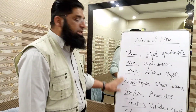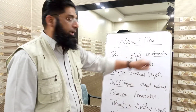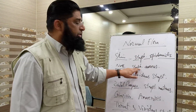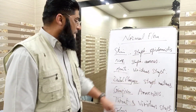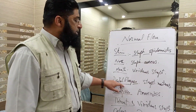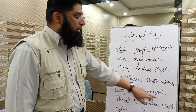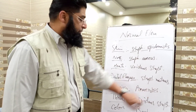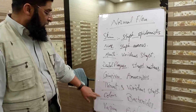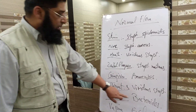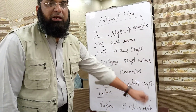Here are the most important members of the normal flora by body site: Skin — Staph epidermidis. Nose — Staph aureus. Mouth — viridans streptococci. Dental plaques — Streptococcus mutans. Gingiva — different anaerobes. Throat — viridans streptococci. Colon — Bacteroides. Vagina — E. coli and Lactobacillus.